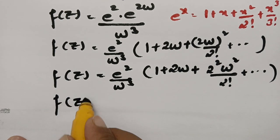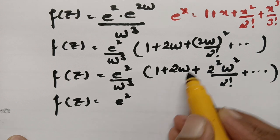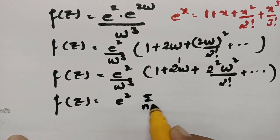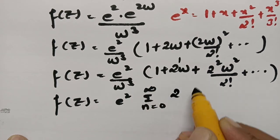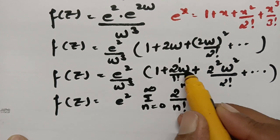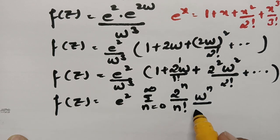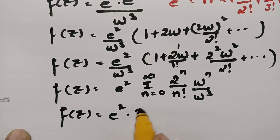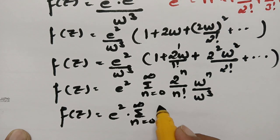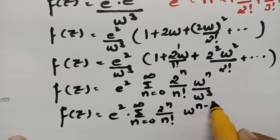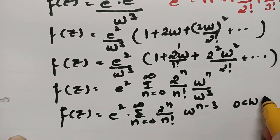Therefore f(z) can be written compactly as e² times the sum from n = 0 to infinity of (2^n / n!) · w^(n-3), valid for 0 < |w| < 1. The terms follow the pattern 2^n / n! corresponding to 2^0, 2^1, 2^2, ... in the numerator and 0!, 1!, 2!, ... in the denominator.